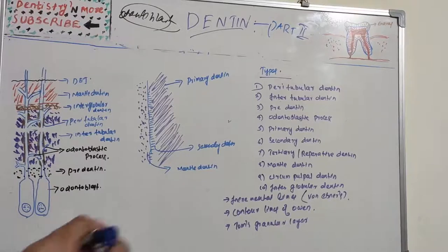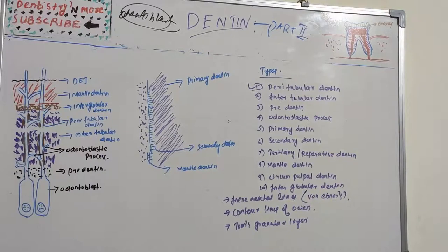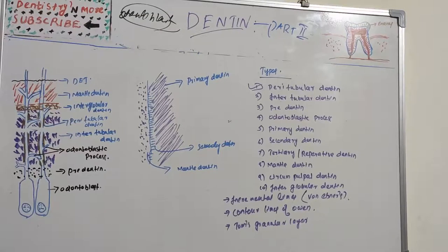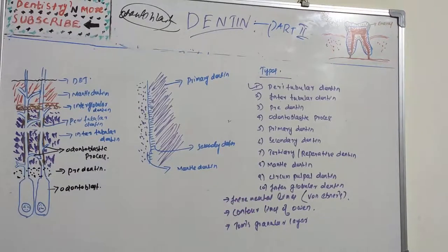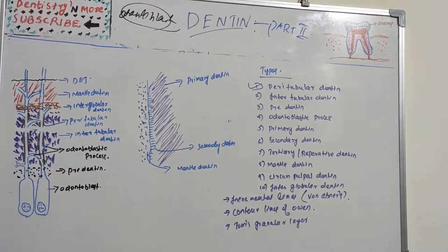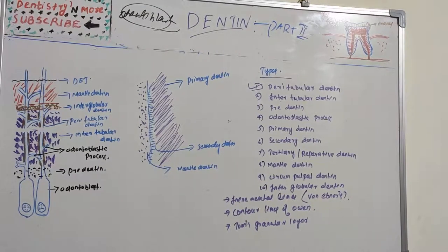All these questions are very important because they are commonly asked short notes in university exams. Topics include peritubular dentine, intertubular dentine, predentine, odontoblastic processes, primary dentine, secondary dentine, tertiary dentine, mantle dentine, circumpulpal dentine, interglobular dentine, contour lines of Owen, von Ebner's lines, and Tomes' granular layer.